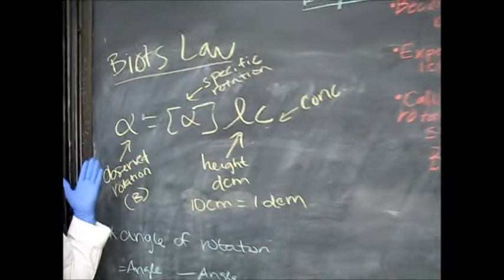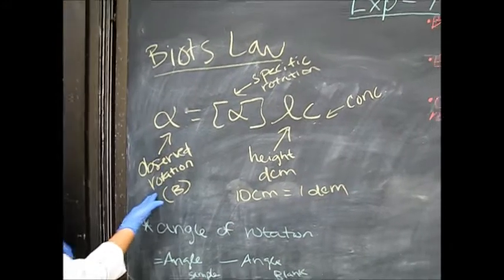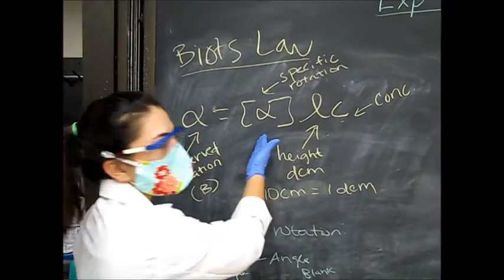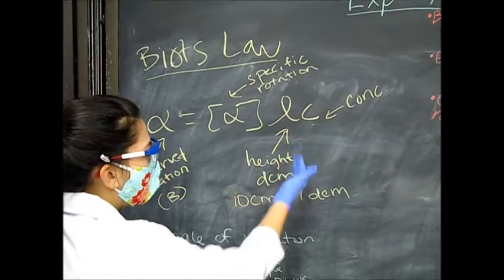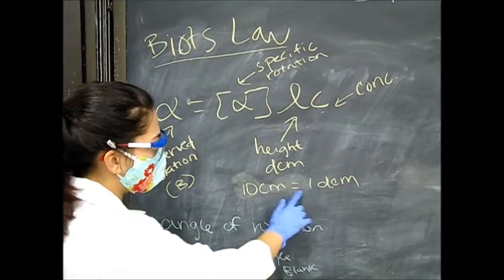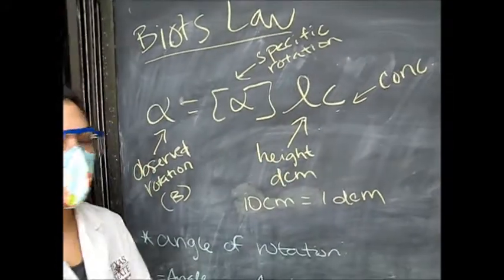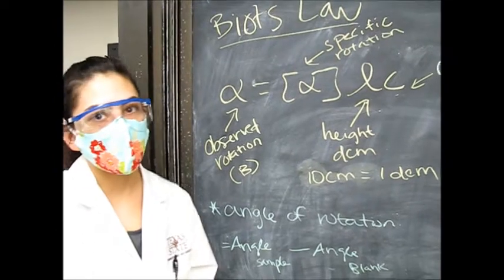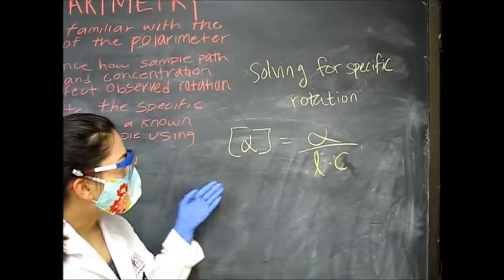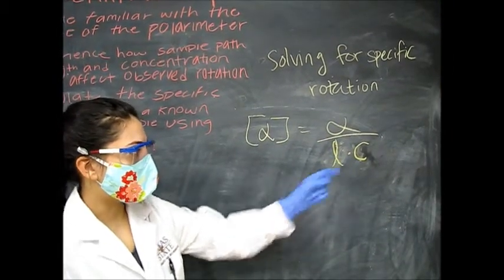I wrote up Biot's Law because this is the math we're going to be using in this lab. The observed rotation is what you find when you use the polarimetry machine. The specific rotation is what you'll be solving for. Height will be in decimetres — for every ten centimeters, it's one decimetre. Concentration is in grams over milliliters. To find specific rotation, we rearrange Biot's Law: specific rotation equals observed rotation divided by height times concentration.